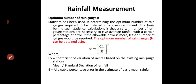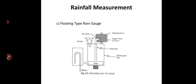Before starting actual rainfall measurement, we look at site selection criteria for a rain gauge. We cannot place a rain gauge in a crowded or residential area. The place must be on leveled or open ground. Any object like a building or tree that could obstruct the rain gauge should be at least 30 meters away. The location of the rain gauge must represent the average conditions of the region.